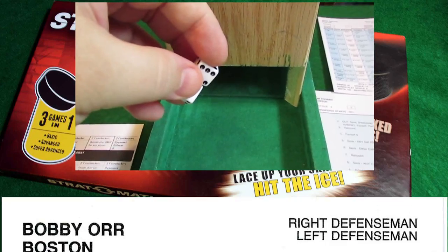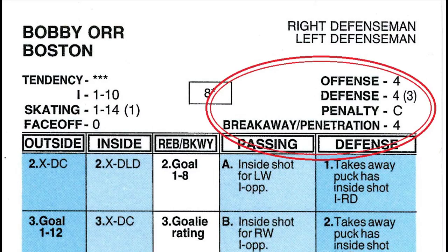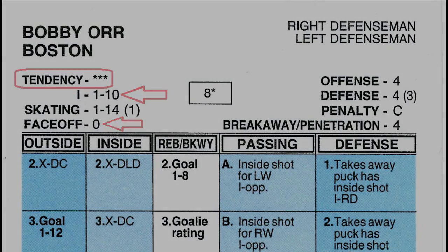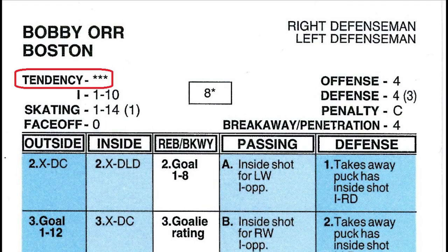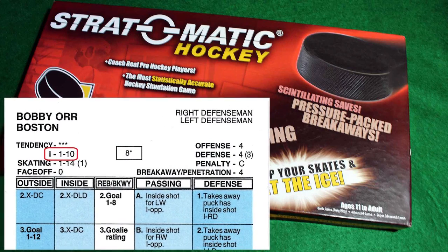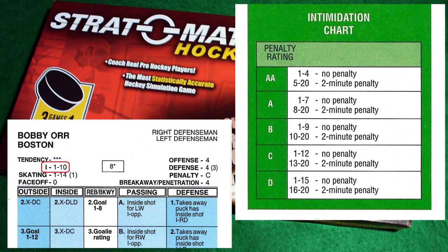The third component, like the basic version, is the player cards and dice. The player's offense, defense, penalty, and breakaway penetration ratings are still applicable. Added to those are the player's faceoff and intimidation ratings. The tendency rating is represented by one to five stars found under the player's name — the more stars a player has, the more likely they would shoot from the inside, whereas a player with few stars would more likely take an outside shot. This rating is only a guide. The skating rating is used in the super advanced version for shorthanded penalty killing. The intimidation rating is a range of numbers reflecting how adept the player is at taking away the puck when the opponent is attempting a pass for an inside shot — the wider the range and the higher the second number, the better.